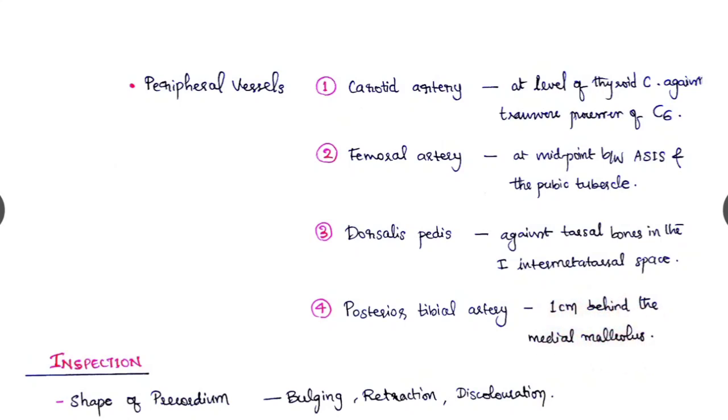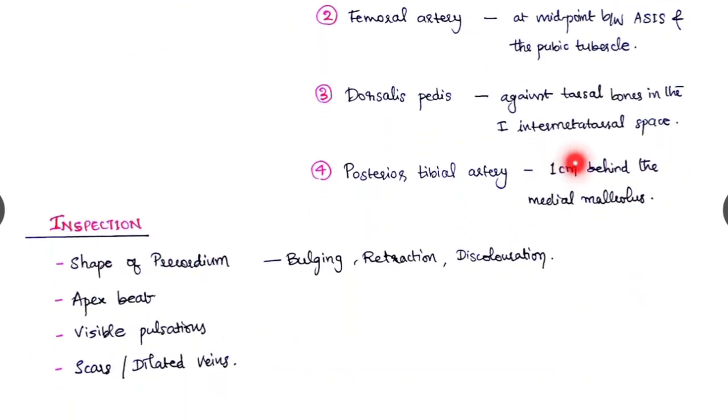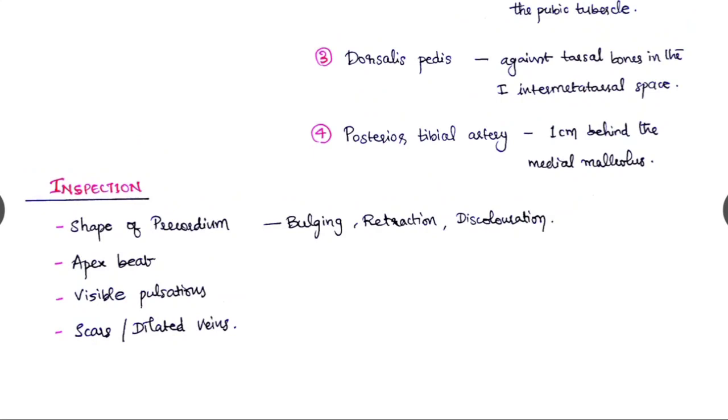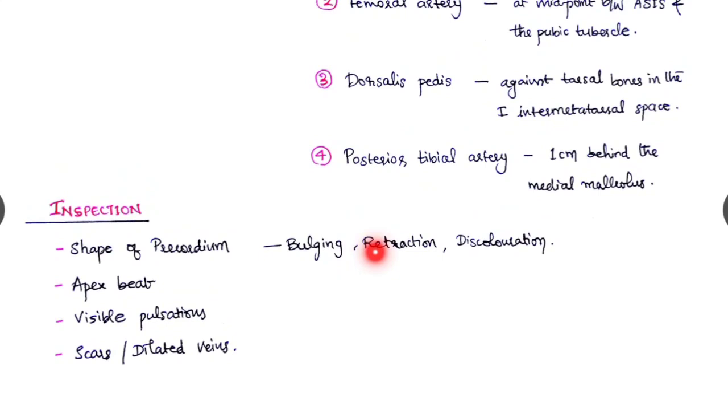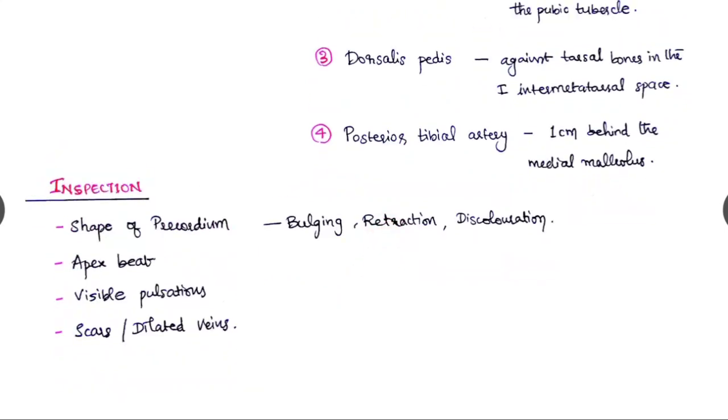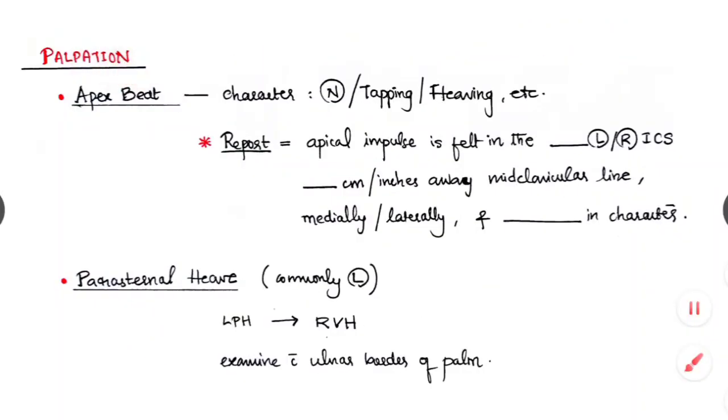And coming to the CVS proper inspection: the shape of the precordium, whether it is bulging, whether there is any discoloration, whether any retraction is present or not. The apex beat, whether it is visible, and any other pulsations, dilated veins or scars that we have to tell. Regarding the palpation, apex beat we have to palpate.